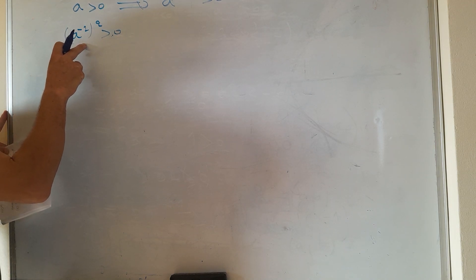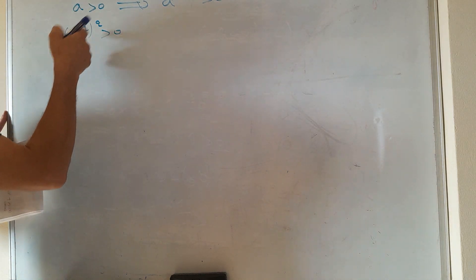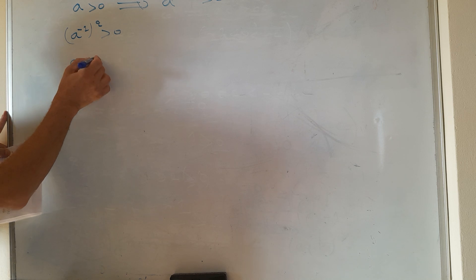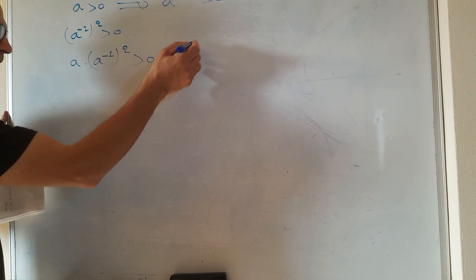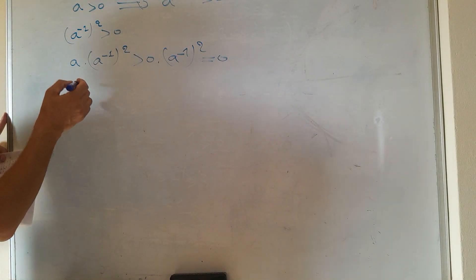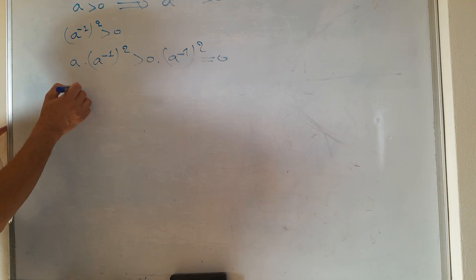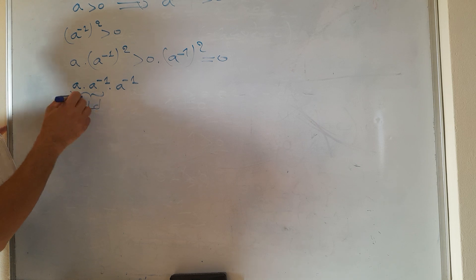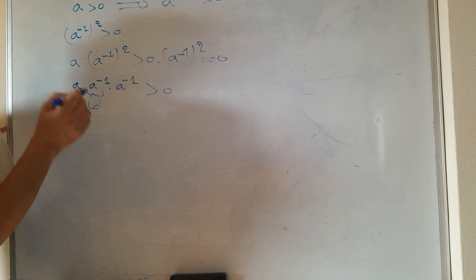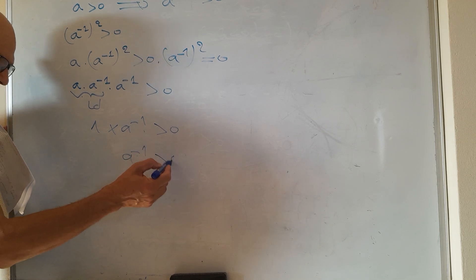Since 1 > 0 and (a⁻¹)² > 0, if we multiply through, we get a · (a⁻¹)² > 0. This equals a · a⁻¹ · a⁻¹ = 1 · a⁻¹ = a⁻¹. So a⁻¹ > 0.